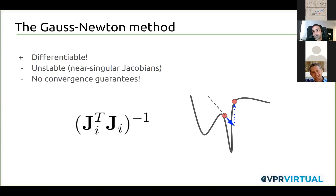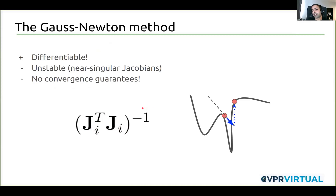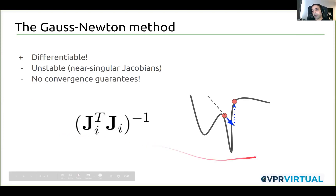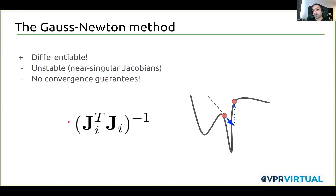The downside of Gauss-Newton is that it tends to get unstable when your Jacobian is near singular — when J transpose J inverse is near singular, the optimization process is numerically unstable. Further, there are no convergence guarantees. You could start off at some point and, since there's no check as to whether you're converging or diverging, depending on how your Jacobian is conditioned, you might even overshoot the minima and move to a totally different part of the landscape.